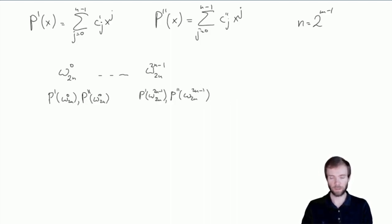Then we need to multiply these values, and the time is linear for that, linear on n. And then we interpolate to get the coefficients of the polynomial p' times p'' of x. And the interpolation step takes time, again due to fast Fourier transform, big O of n log n.